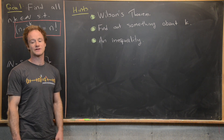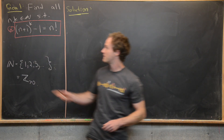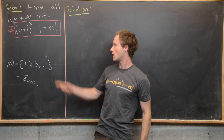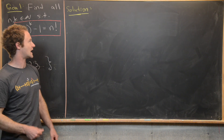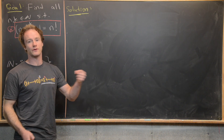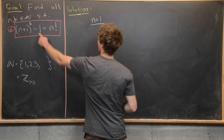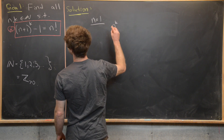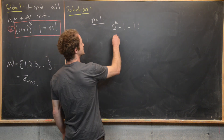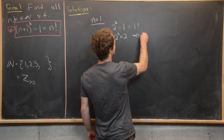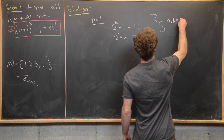Maybe give this problem a go with those hints. Now we're ready to look for a full solution. We'll start by finding explicit pairs (n, k) that satisfy the equation. When n=1, the equation becomes 2^k - 1 = 1!, which means 2^k = 2, so k=1. That gives us the solution (n, k) = (1, 1).